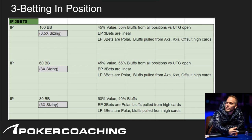The sizing we're going to use most of the time at 100 big blinds is 3.5x, and as stack size gets smaller we go with smaller sizings. At 100 big blinds when we 3.5x in-position three-bets, we're using roughly 45% value and 55% bluffs from all positions versus a UTG open. Early position three-bets are linear and late position three-bets are polar.